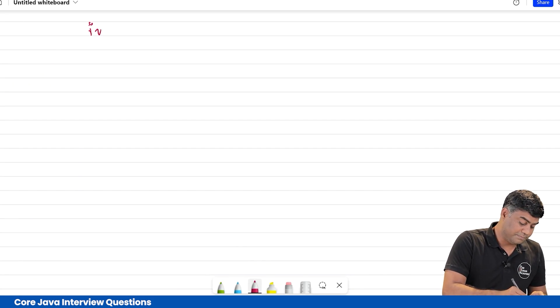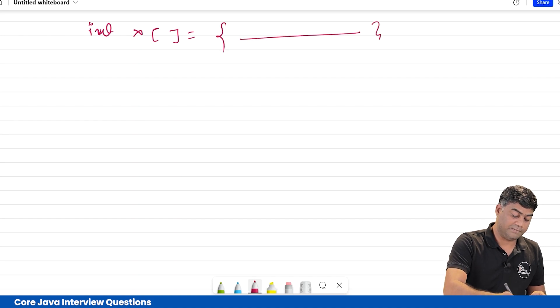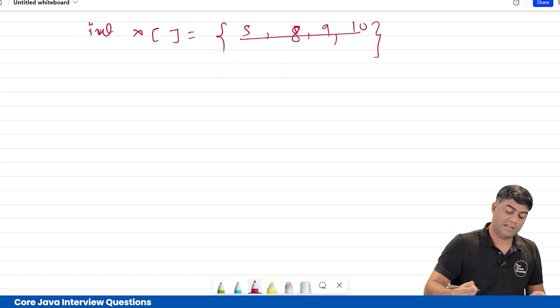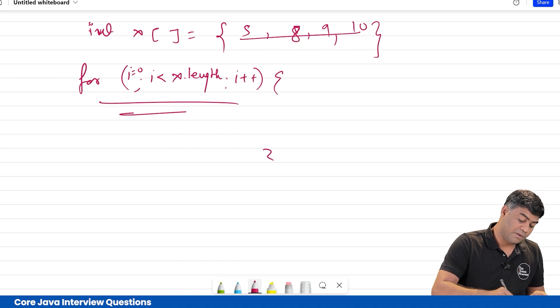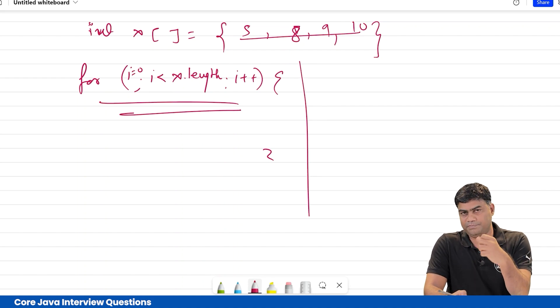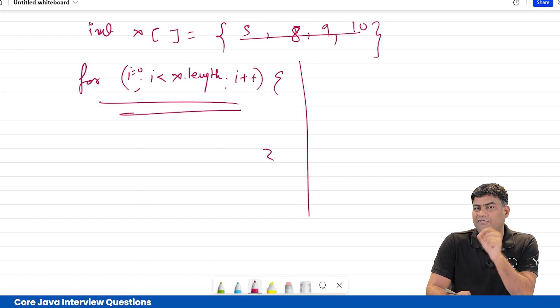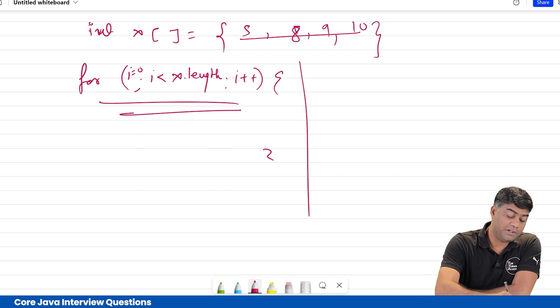To see this in more detail, let's say there is an example: int x with some values like 5, 8, 9. If you want to iterate this, then in ordinary for loop you need to have x.length, i++, and i = 0. But if you go with the for-each loop, which is introduced in JDK 5, you will have a simpler way: for colon.